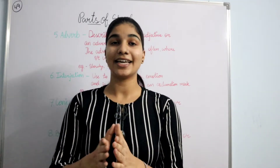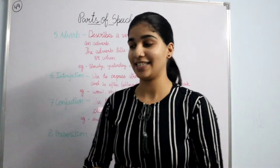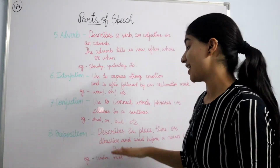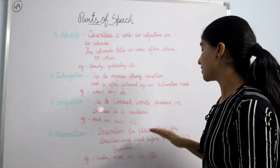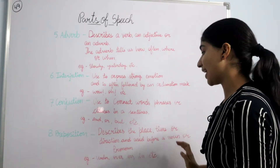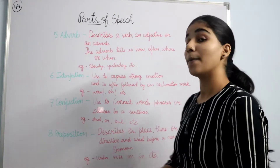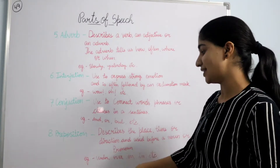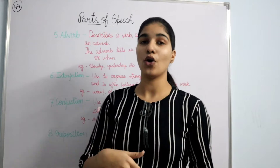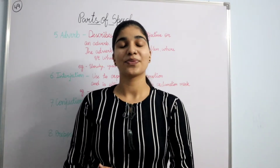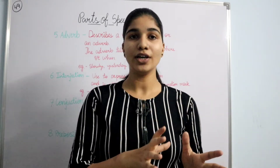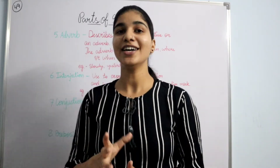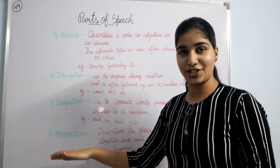Next we have preposition. Preposition describes the place, time or direction and is used before a noun and a pronoun. Examples are under, over, on, etc. Like: the dog jumped over the box. Here 'over' is a preposition.